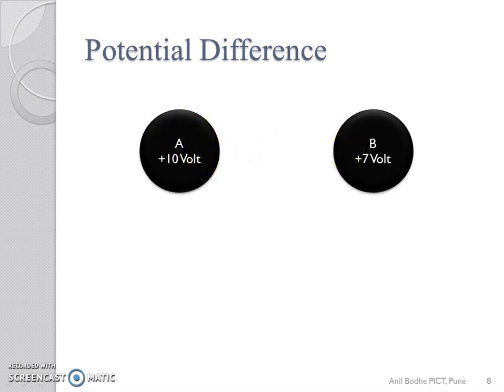There must be a potential difference existing between two bodies A and B and body A is at higher potential than body B.